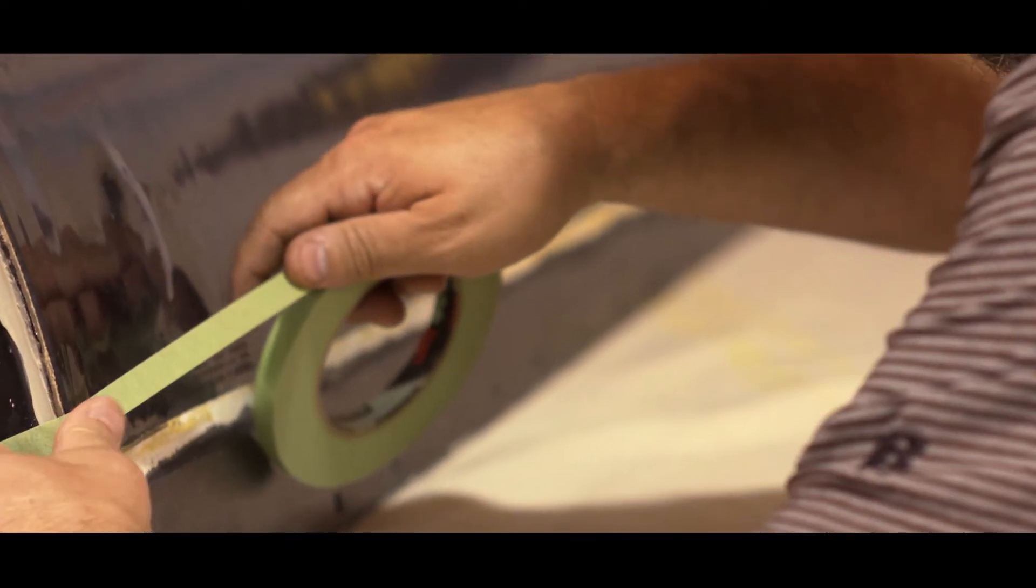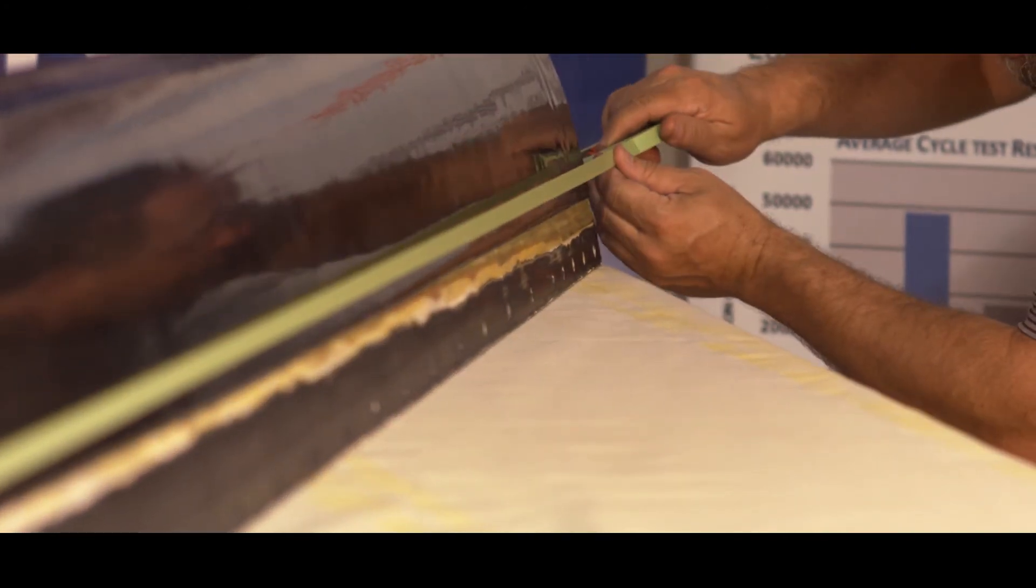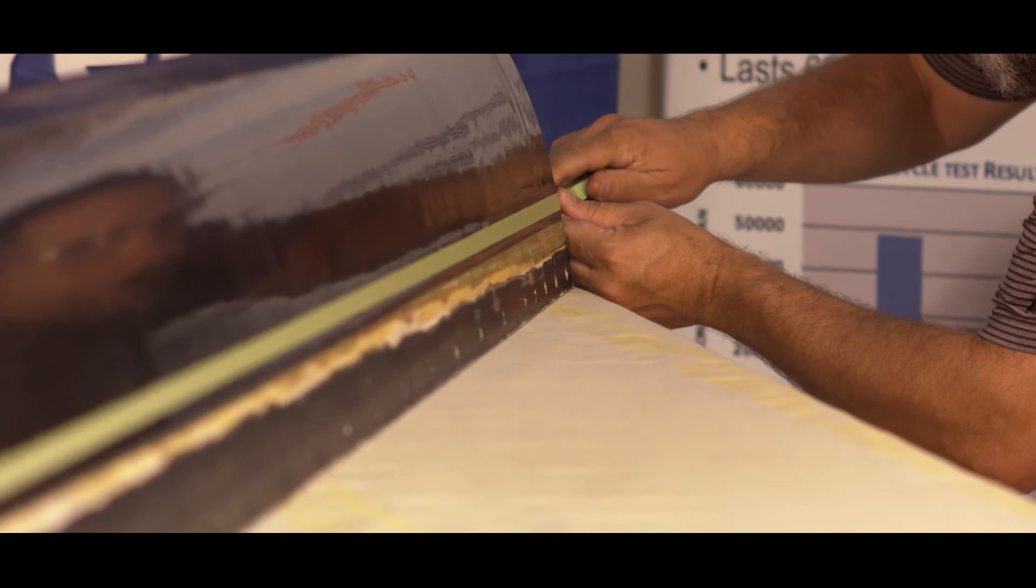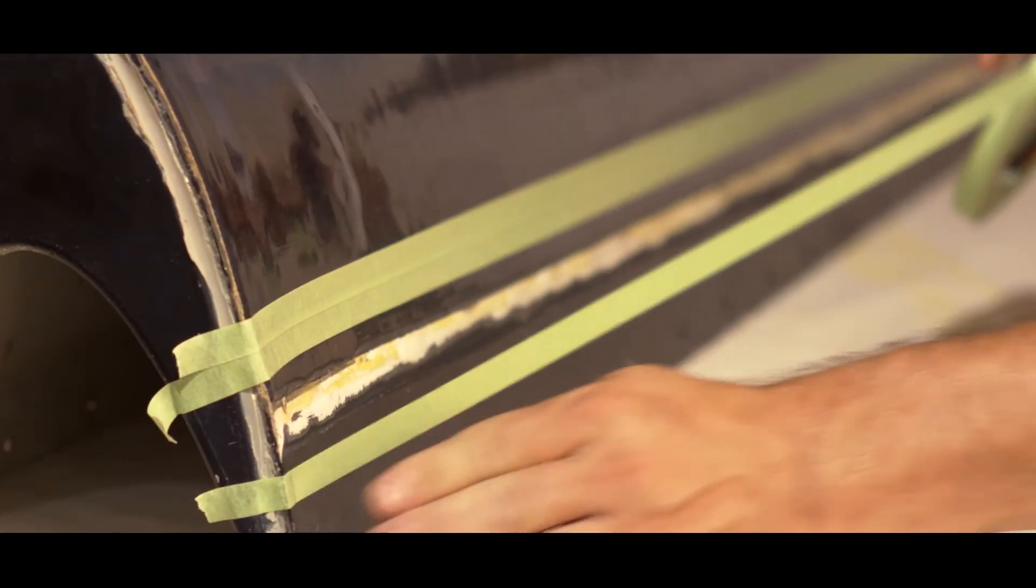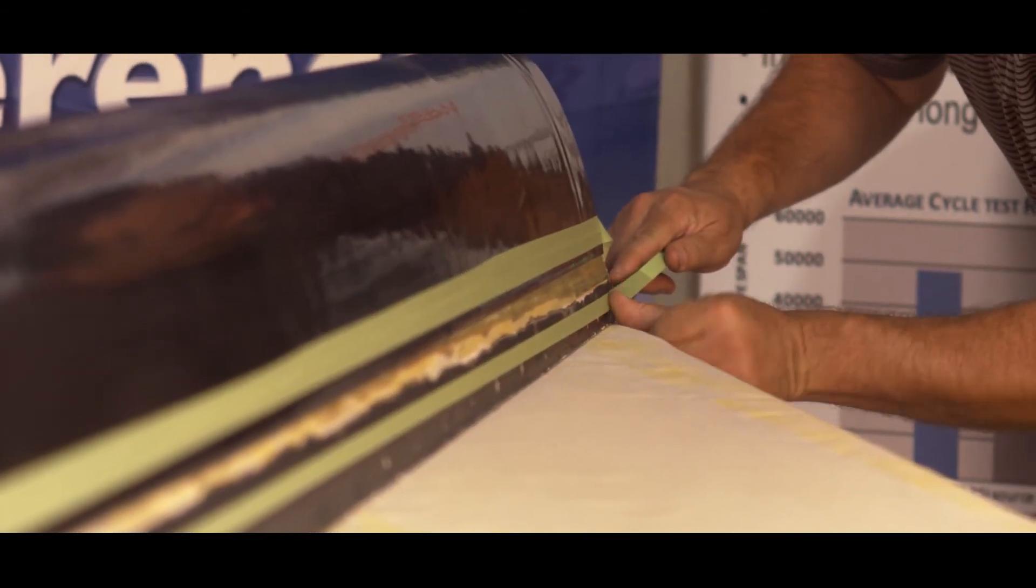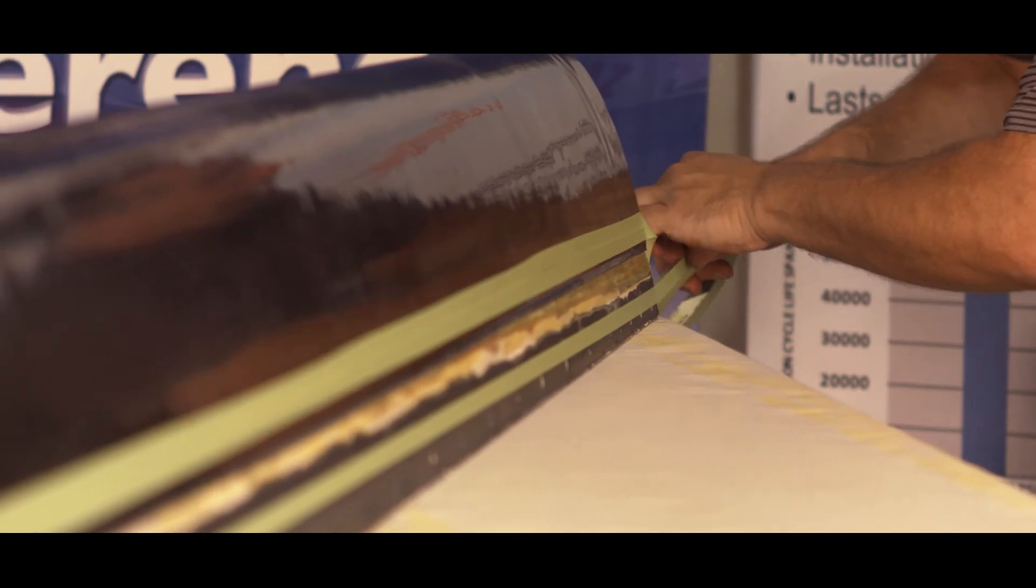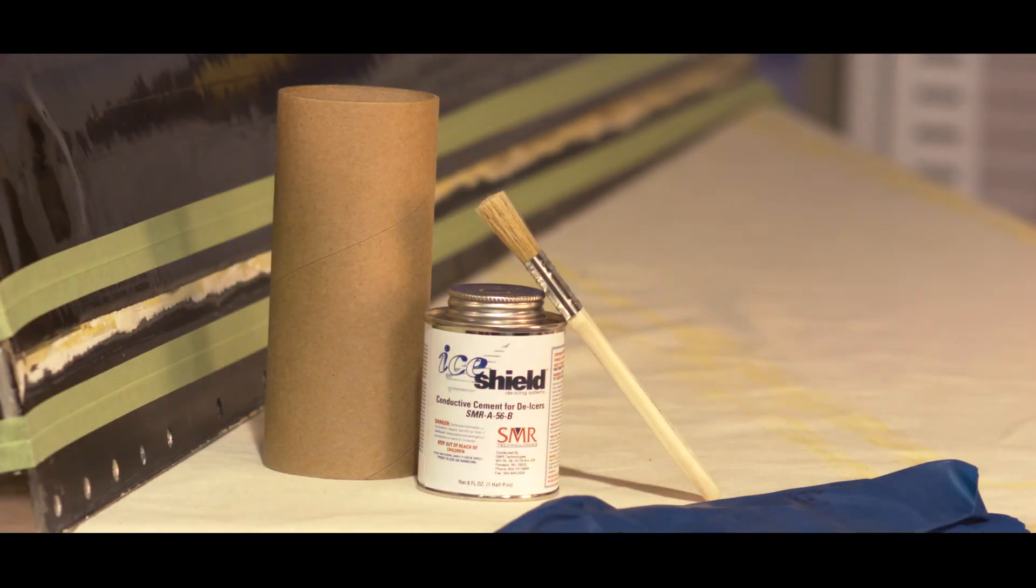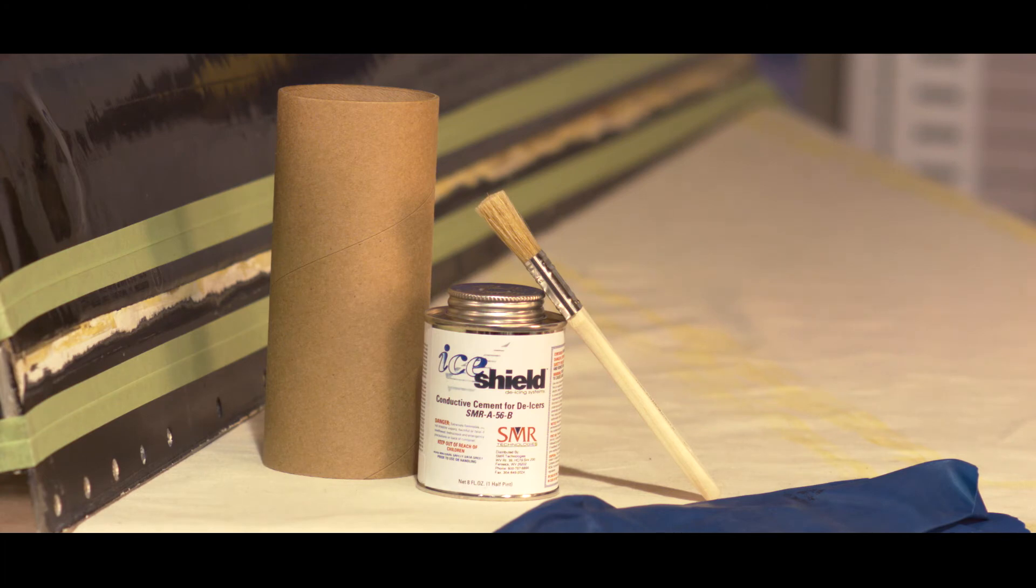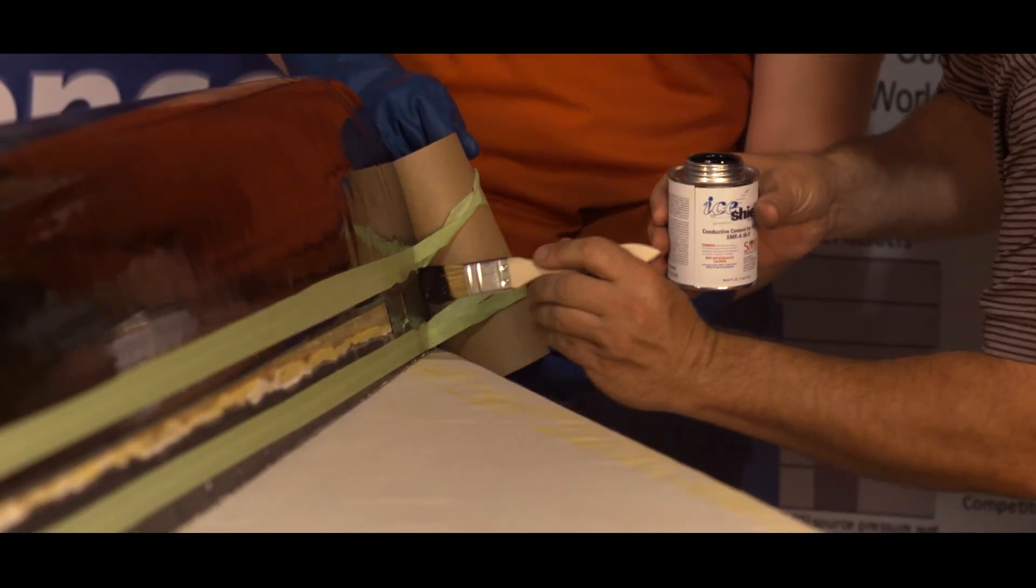The next step entails applying SMR A56B conductive sealer. Apply masking tape approximately a quarter inch in from the edge of the de-ice boot and a quarter to a half inch beyond the de-icer, attempting to cover the entire bare metal surface. There must be at least a quarter inch of bare metal between the de-icer and the edge of the paint on the leading edge in order to assure conductive path from the de-icer to the wing. This conductive path will allow static electricity to discharge from the de-ice boot.